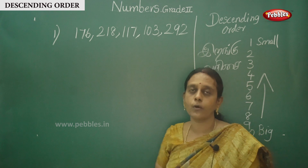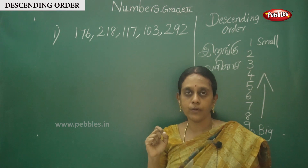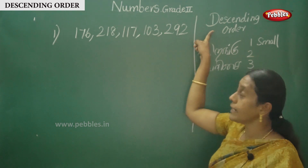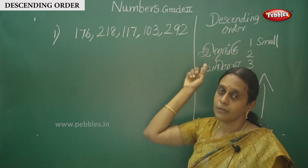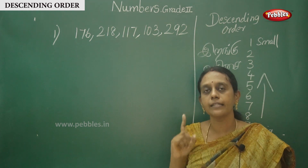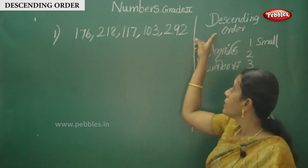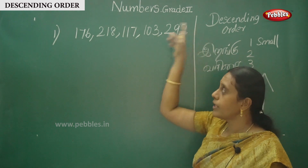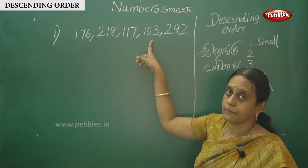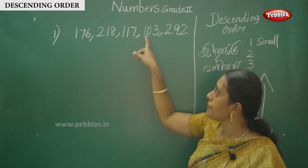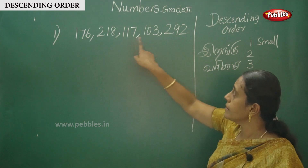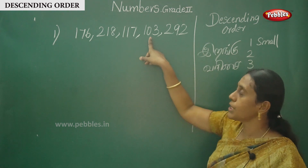Focus on the hundreds place. We are doing descending order. So: 176, 117, and 103. Now check the second place — tens digits: 7-tens, 1-ten, 0-tens. This is expanded form: 100s, 10s, 1s. The number with 7 in the tens place is bigger.